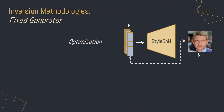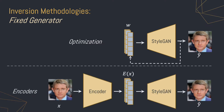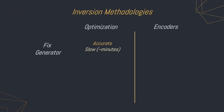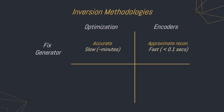To invert and edit real images with StyleGAN, early works focus on optimization-based schemes to accurately reconstruct the target image through direct optimization of a latent code. Aiming to invert images in real-time, there have been numerous encoder-based approaches which train a network on a large set of images to learn a mapping between the real image and its latent representation. So on one end of the spectrum we have accurate but slow optimization approaches, and on the other end we have encoders, which are quite fast but less accurate.